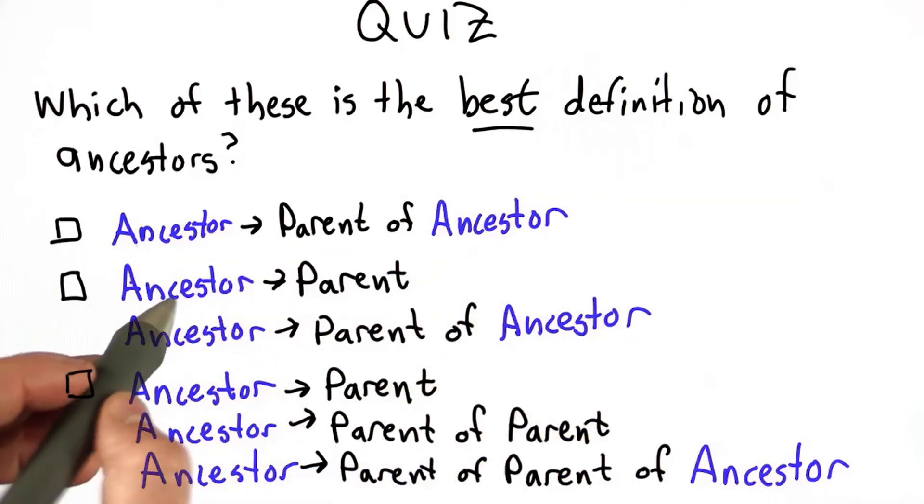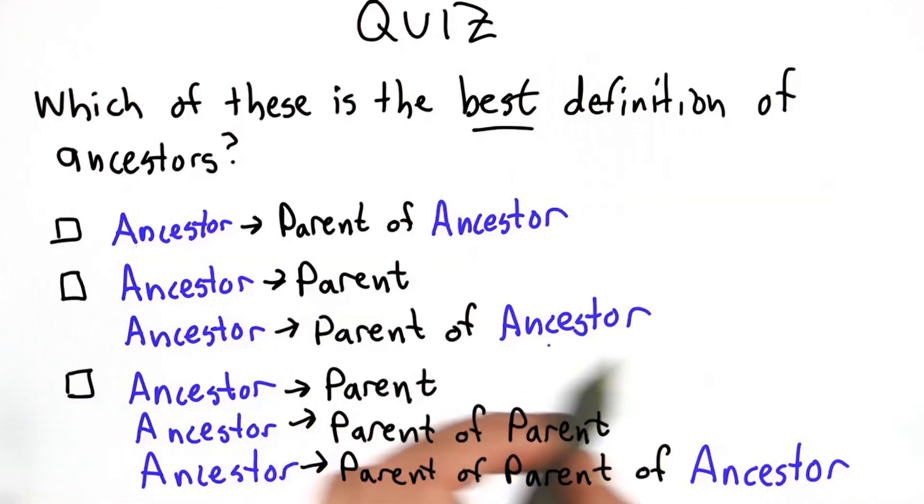The second has two rules, ancestor is replaced by parent, and ancestor is replaced by parent of ancestor.